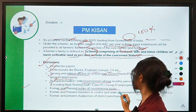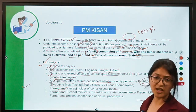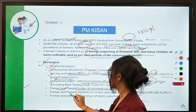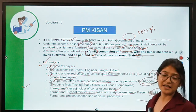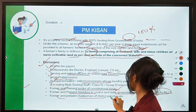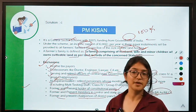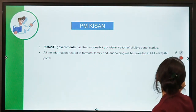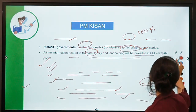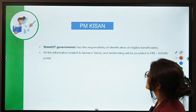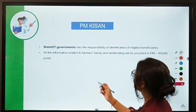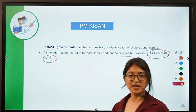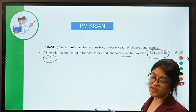Former and present holders of constitutional posts — like President, PM, Governor, CM — are not covered. Former and present ministers of central and state governments, present MPs and MLAs, are also not covered. Former and present chairpersons of district Panchayats are excluded — only the chairperson, not all members. The state and UT government is responsible for identifying eligible beneficiaries, and all information related to farmer families and landholding is available on the PM Kisan portal.